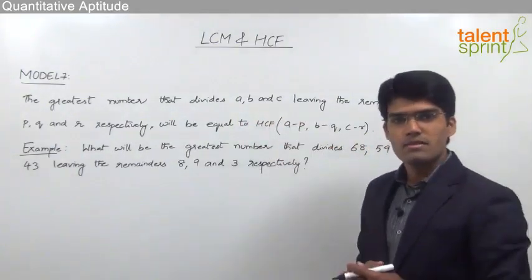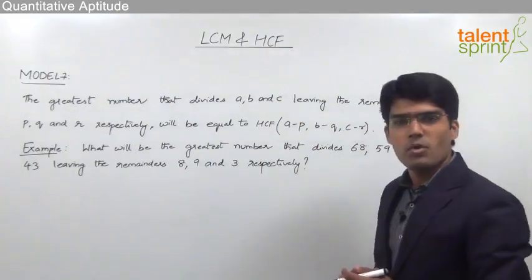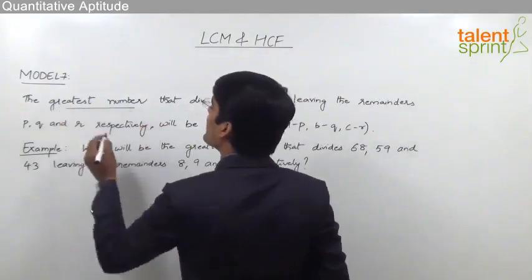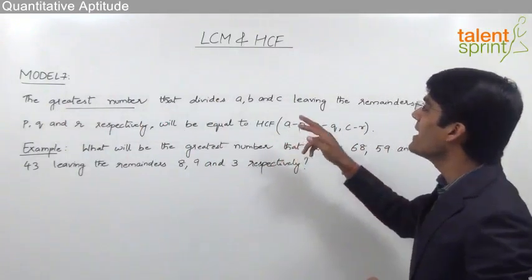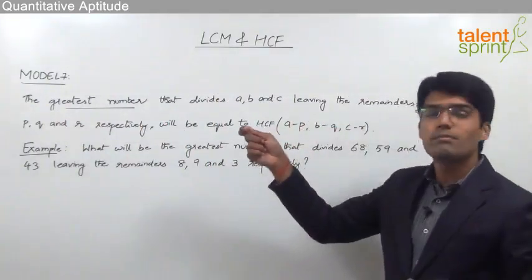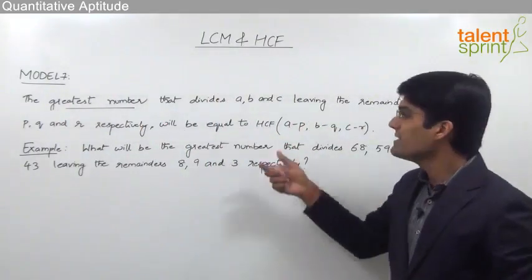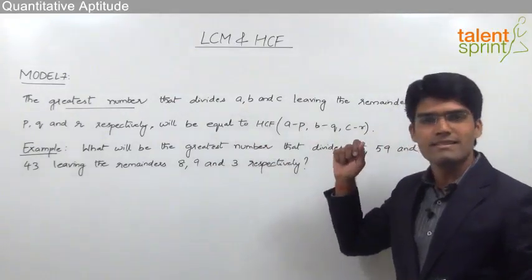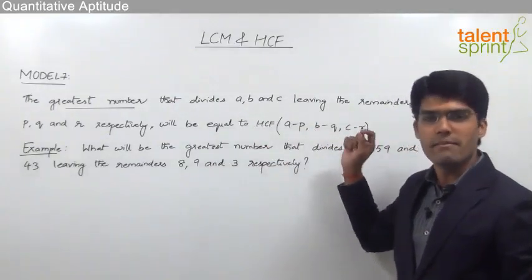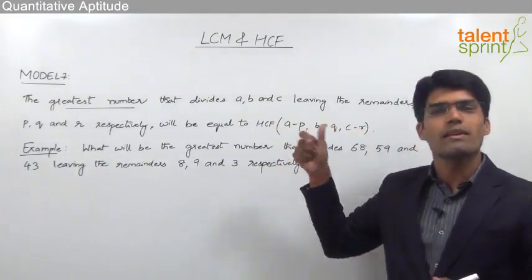So what we understand from this point is whenever we need to find out the greatest number that divides a, b, c leaving the remainders p, q, r respectively, that means there are three different dividends a, b, and c. And when this number divides these three dividends a, b, and c, the remainders are p, q, r respectively.